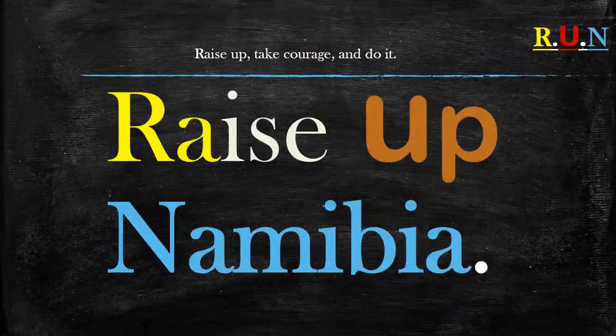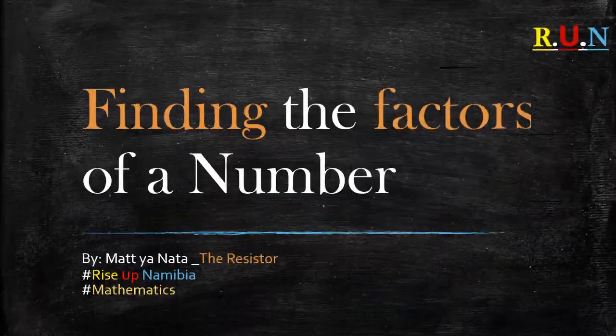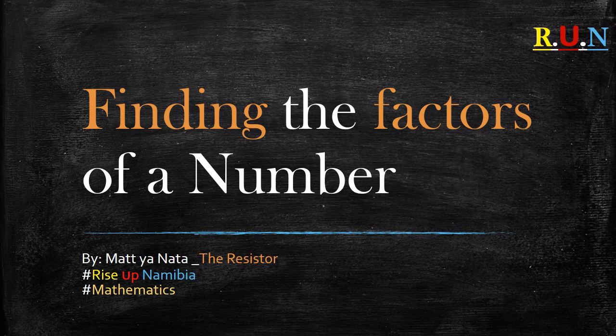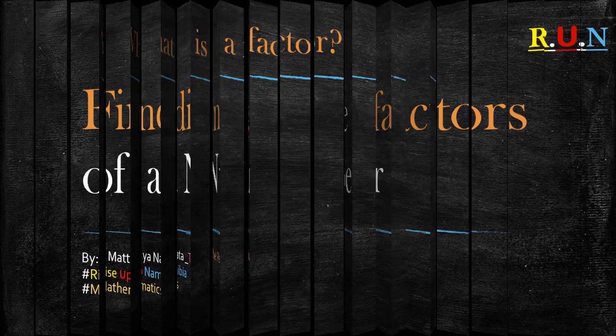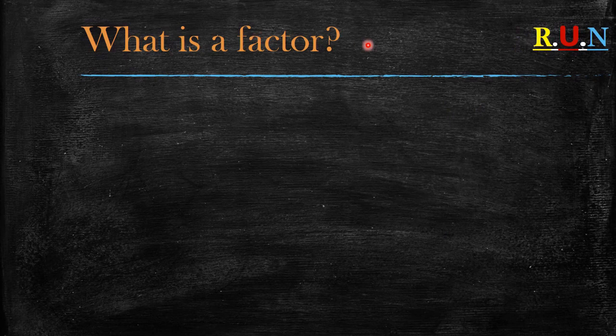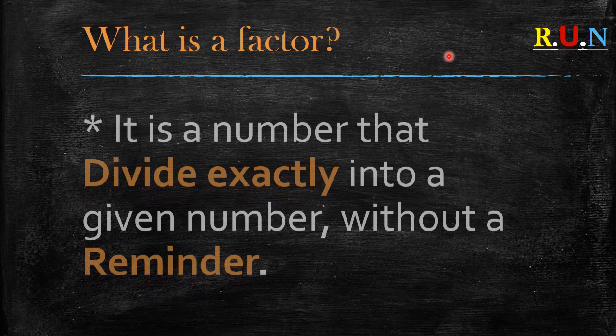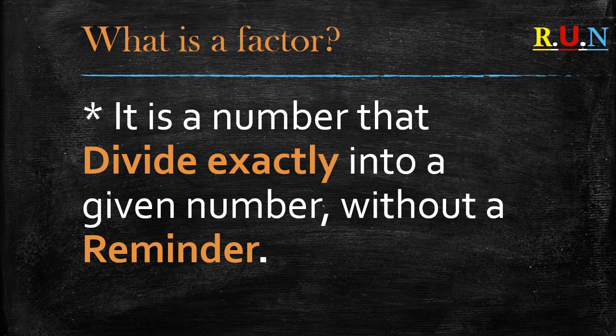Welcome to Rise Up. Today we're going to be looking at finding the factors of a number — shoutouts to metyanata, the resistor of bed, hashtag duck, and lovely underscore walk by faith and not by sight. We're going to start with a definition: what is a factor? A factor is a number that divides exactly into a given number without a remainder. If you don't understand the definition, don't worry — we'll get into examples that will enlighten your understanding.